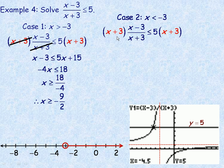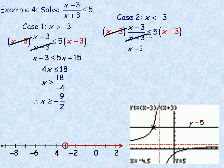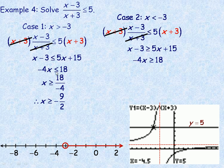Now for the next case, again we're going to multiply, and this second case is x is less than negative 3. We multiply both sides by x plus 3 again, but if x is less than negative 3, x plus 3 actually has a negative value. So after the x plus 3 is divided out, multiplying by the negative x plus 3 means the inequality changes direction. So we have x minus 3 on the left is now greater than or equal to 5x plus 15. The algebra is the same — the expression is the same on both sides — but the inequality is in the opposite direction.